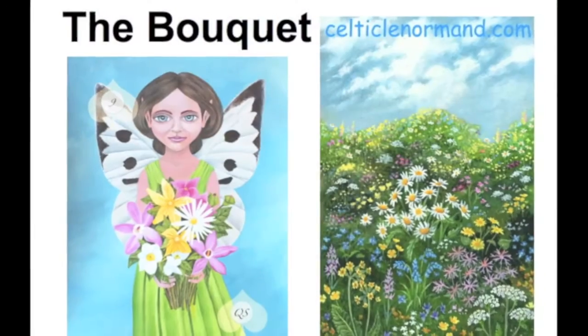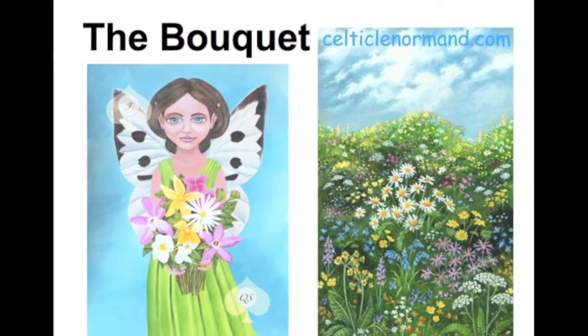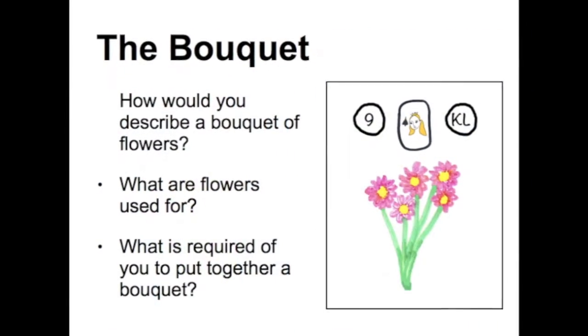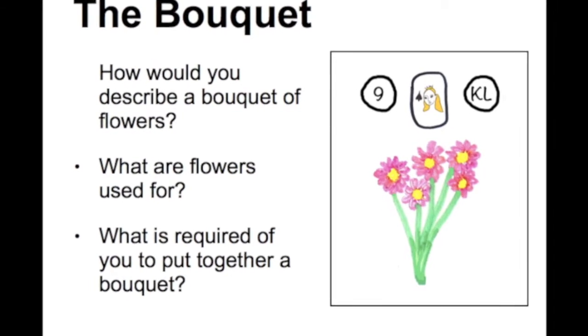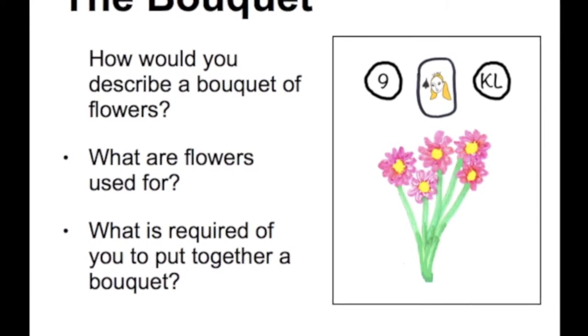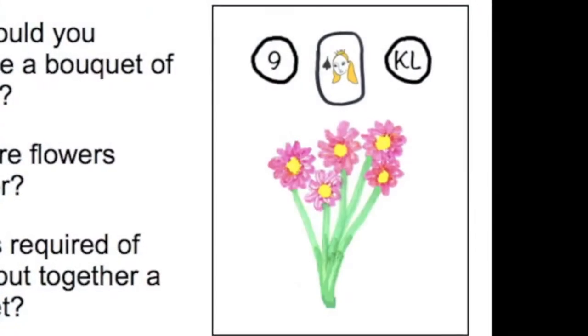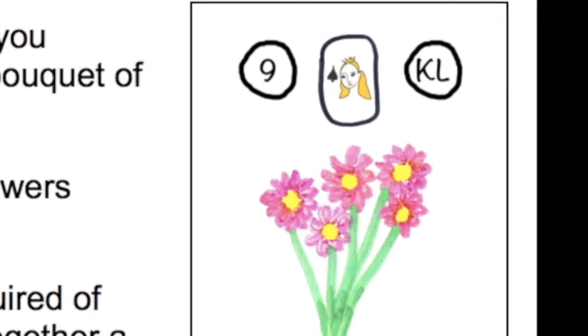If we turn to look at the bouquet, or the flowers as it's sometimes called, the questions here would include: how would you describe a bouquet of flowers? What are flowers used for? And what is required of you to put together a bouquet? I use the Kindergarten Lenormand cards here, as this is also a court card — we have the association to the Queen of Spades, and so this can be associated with a woman who is often seen as someone who is diplomatic or charming. How would you describe a bouquet of flowers? Well, hopefully it would be beautiful and appealing.